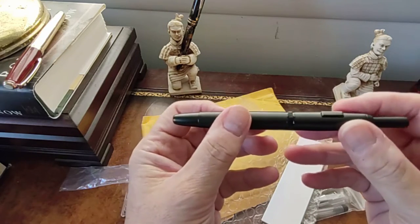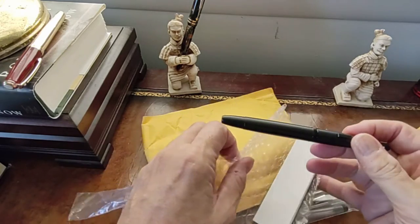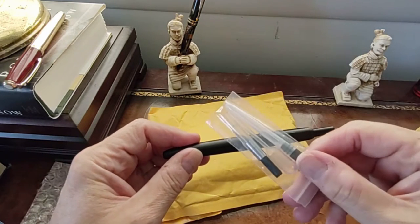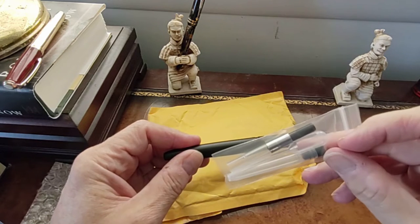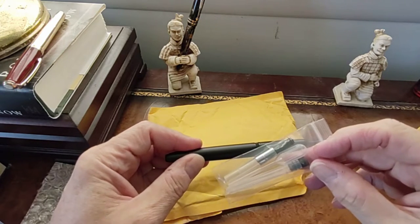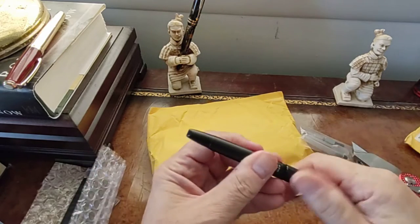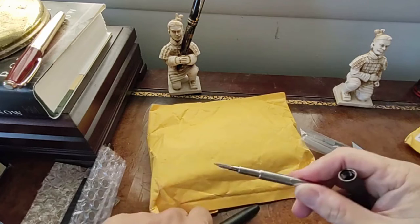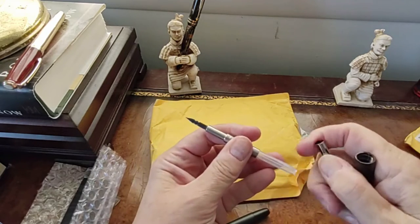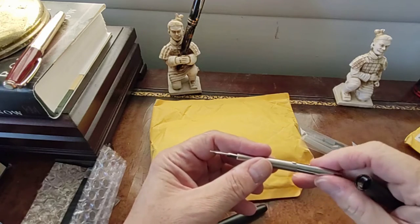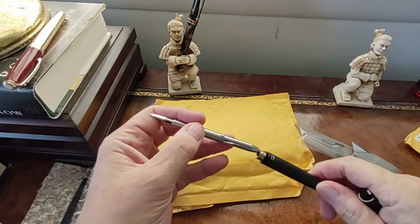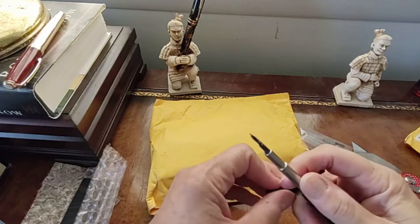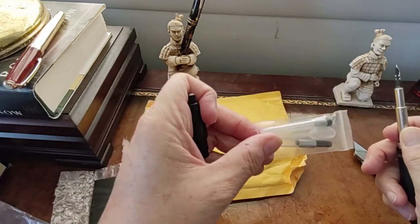There we go, a nice roll stop as opposed to a clip. I have an orange one with a clip and converter. And let's see, I think this has the empty ink cartridge inside.